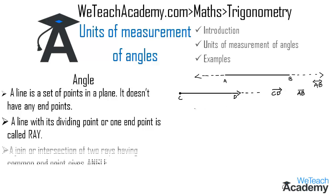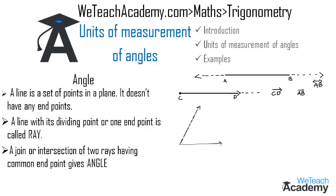Now coming to the angle: the join or intersection of two rays having a common endpoint gives an angle. Here, these two rays intersect at a common point called the vertex, named O. This forms what is called an angle.